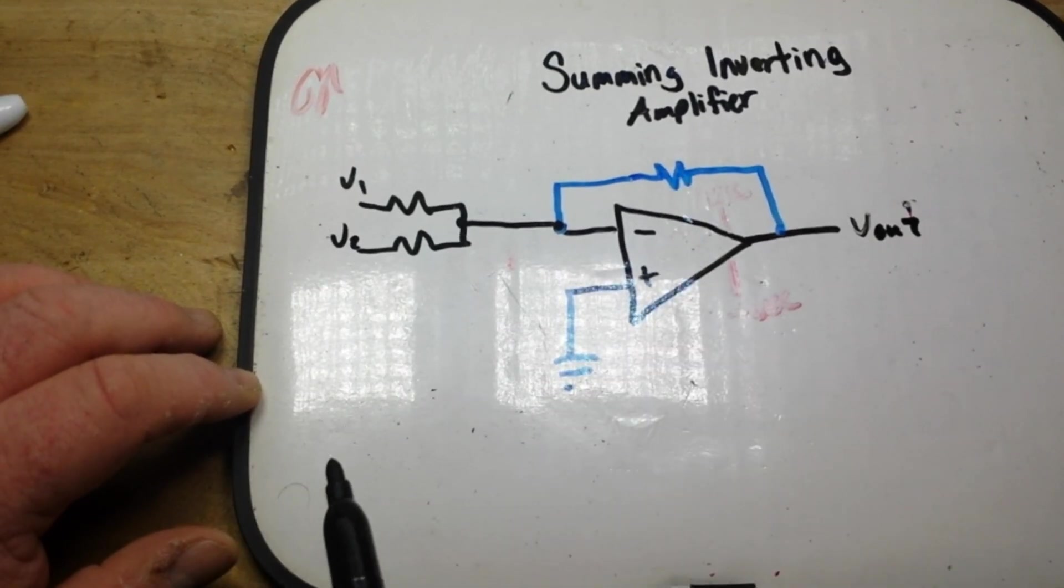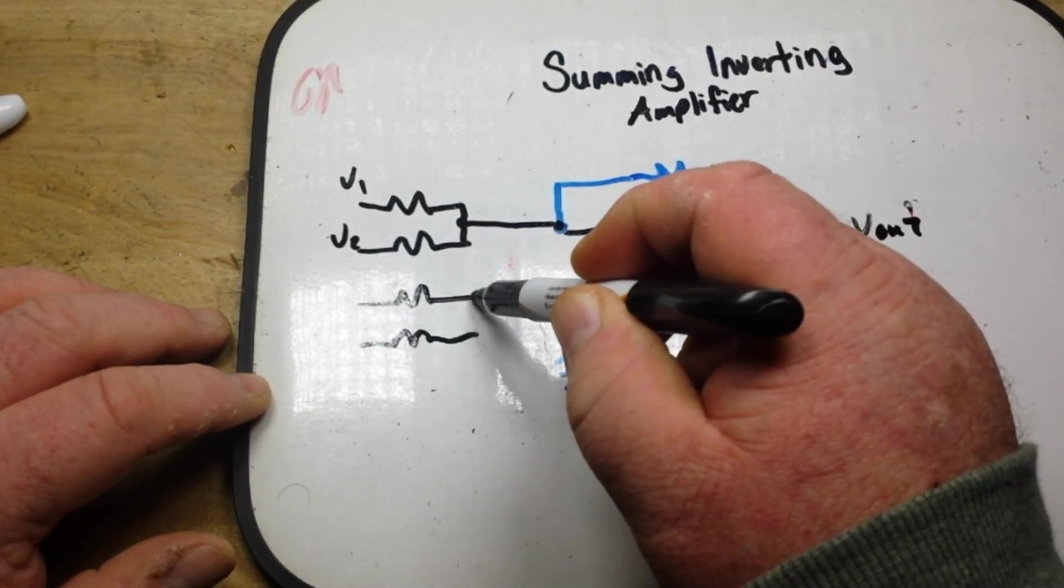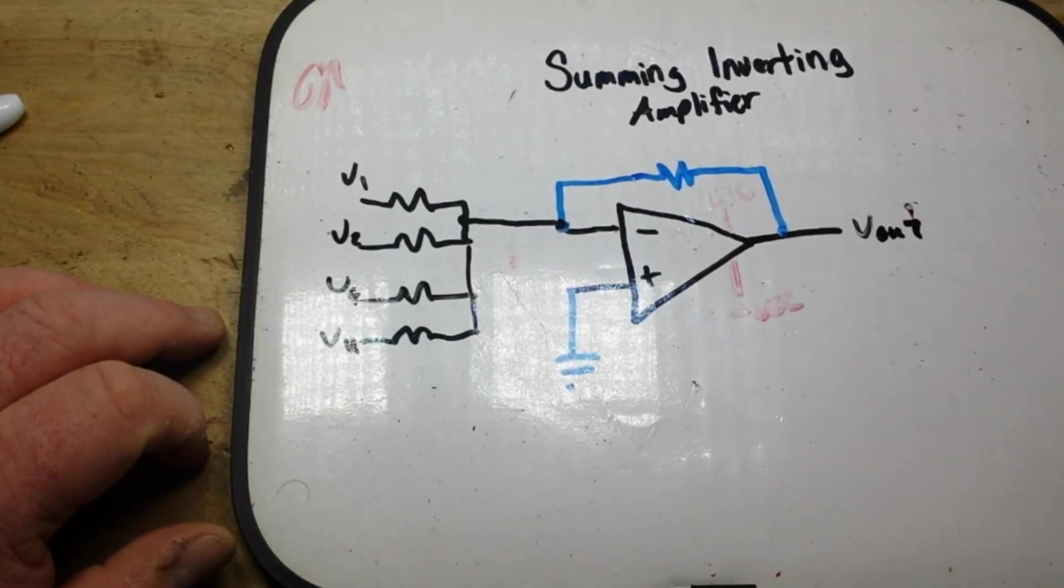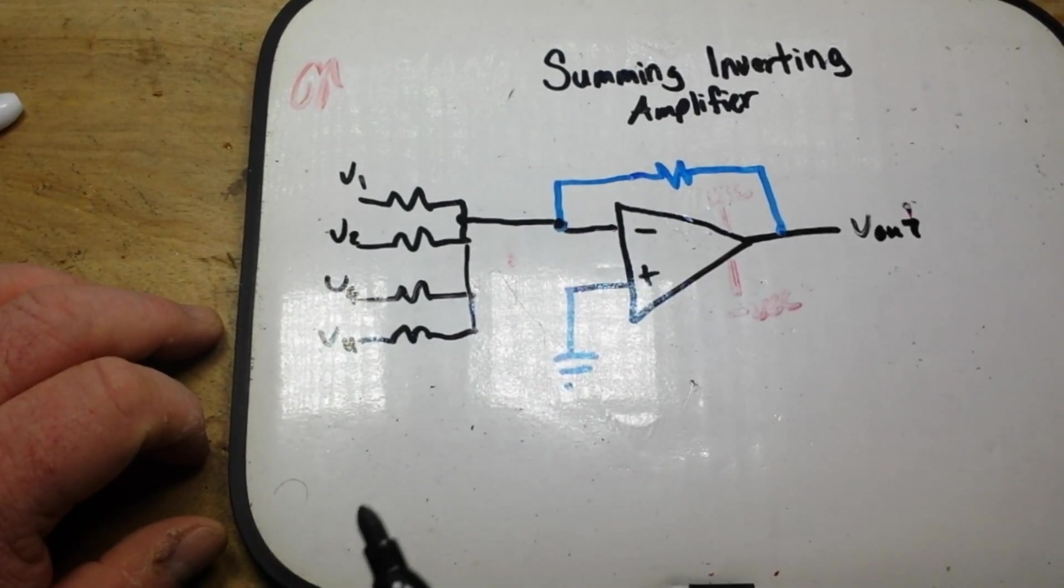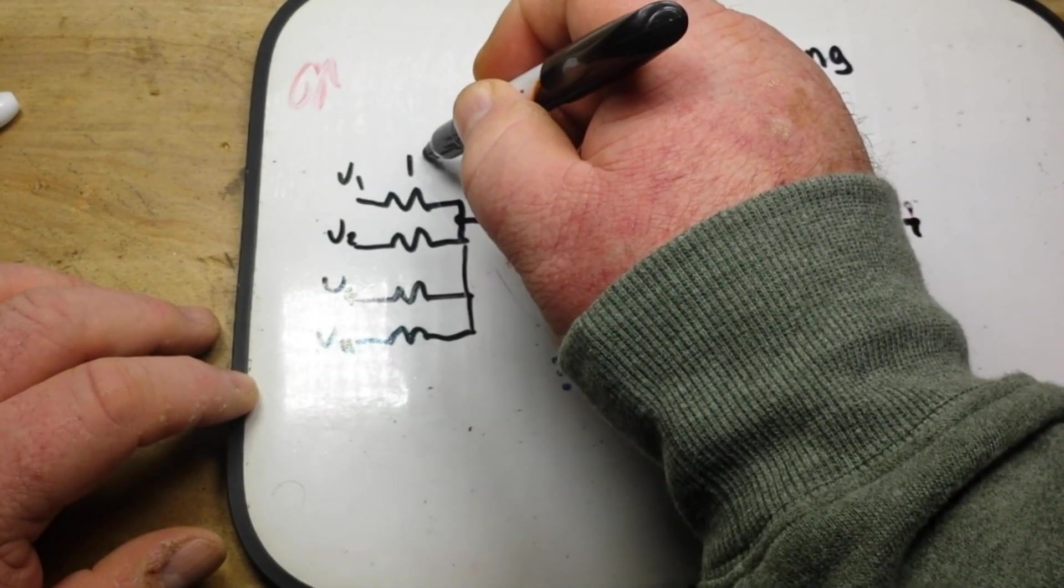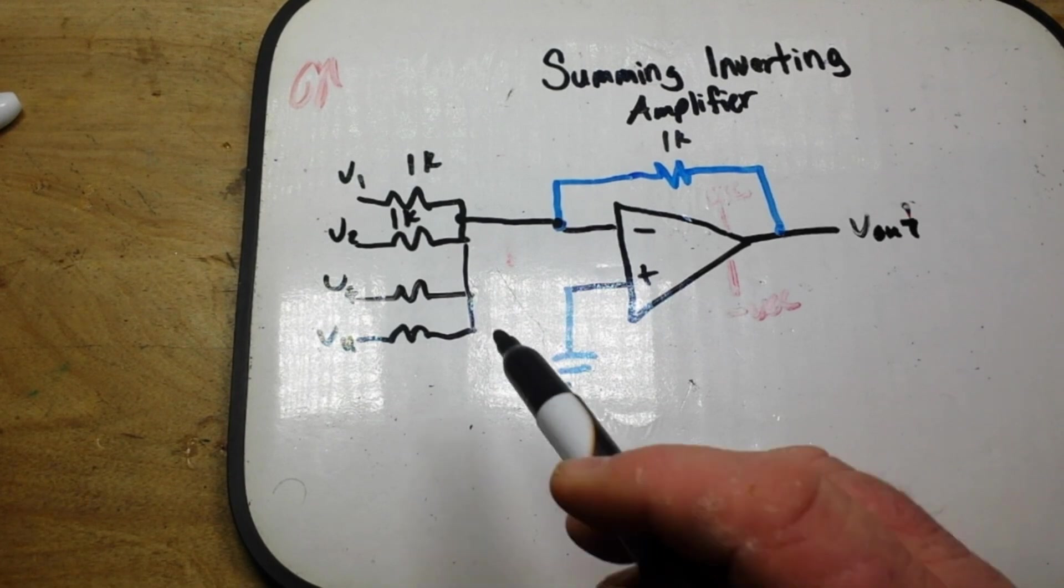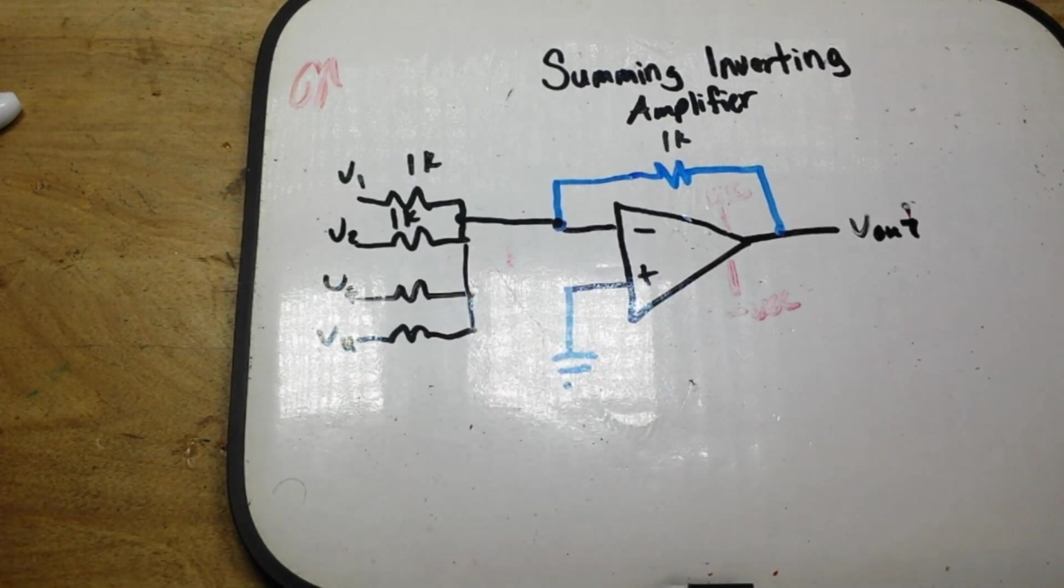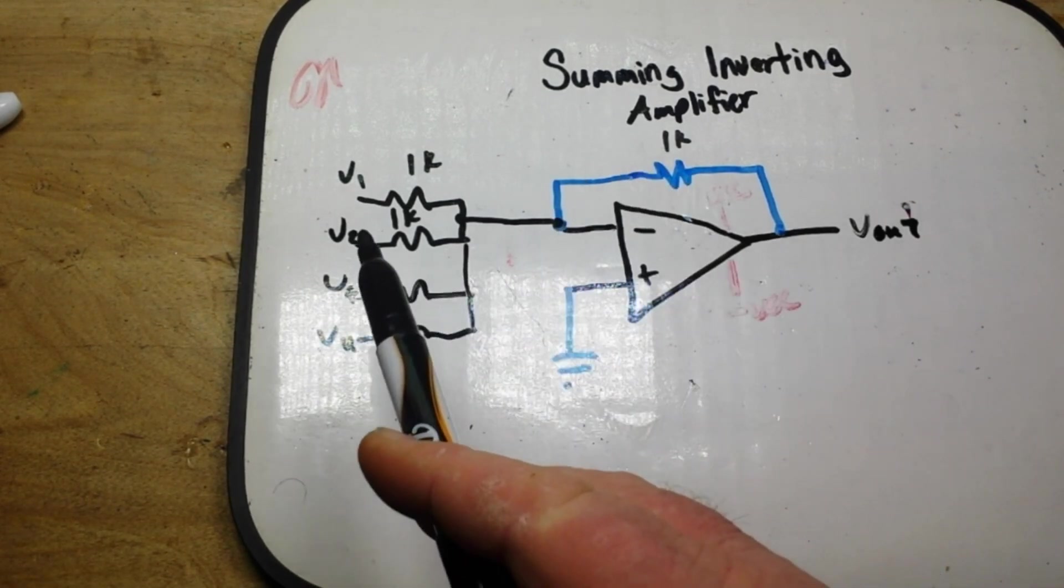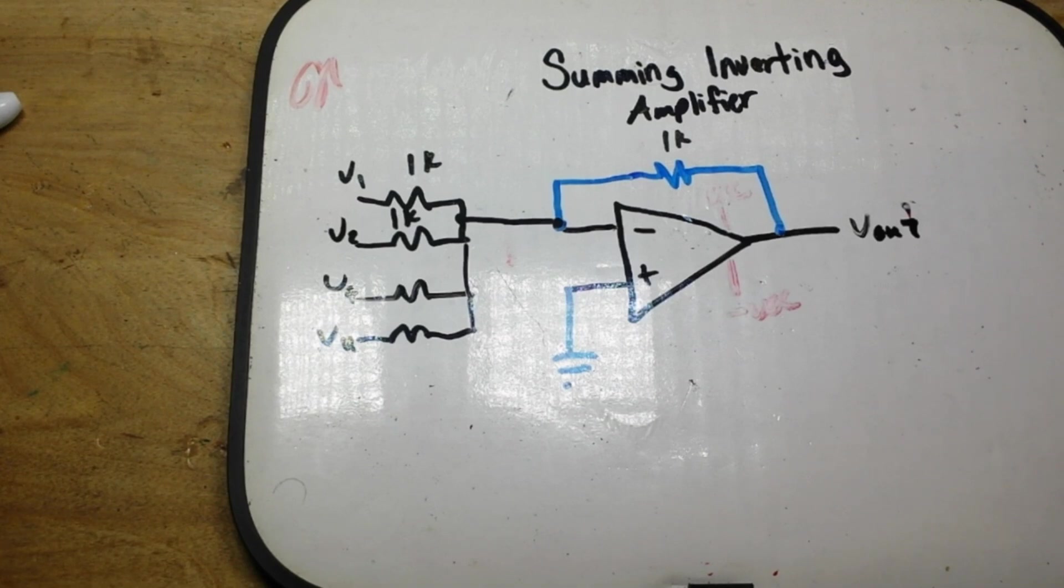Now the beauty of this is we can add more, it doesn't matter. V3, V4, we have as many of them as we want and it will add them up. Now in our case we are using a 1k feedback resistor and 1k input resistor to keep the math simple. But if you change your input resistor you can change the ratio of the current and therefore the voltage that gets through and you can weight the output, but we're just doing this as a straight through example.